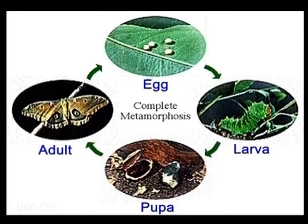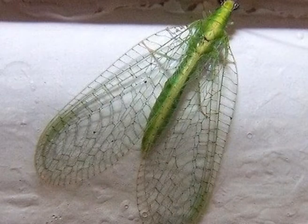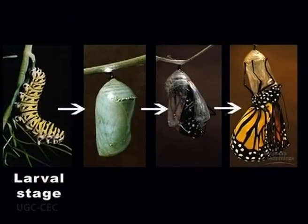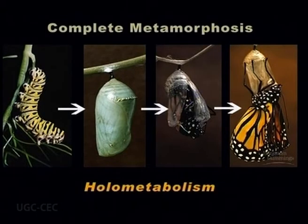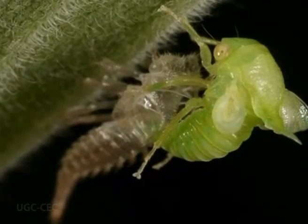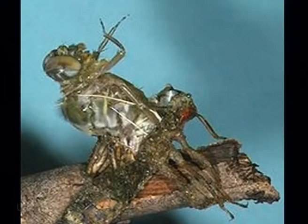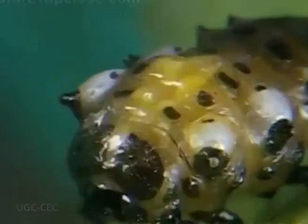In holometabolous insects, immature stages differ markedly from the adults. Insects which undergo holometabolism pass through a larval stage, then enter an inactive stage called the pupa or chrysalis, and finally emerge as adults. This process is called complete metamorphosis. It is theorized that the pupal stage is the evolutionary compaction of all the nymphal stages of their hemimetabolous ancestors, while the larval stage is an extended mobile form of the developing embryo.